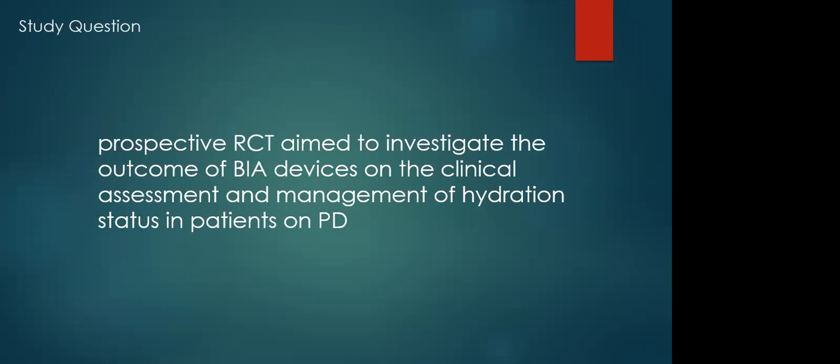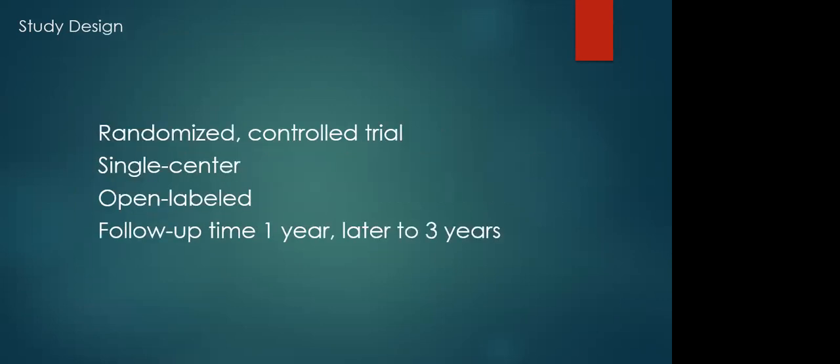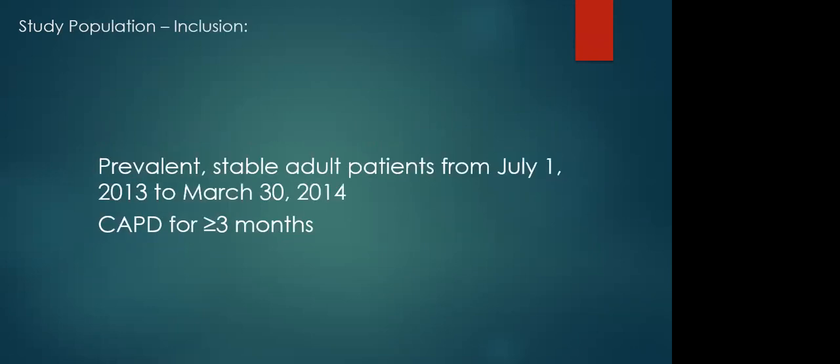The authors of this paper conducted an RCT that shows all-cause mortality as the primary outcome to see if it is at least safe to use this as a viable fluid management approach. It is a prospective randomized control trial aimed to investigate the outcome of BIA devices on clinical assessment and management of hydration status in patients on PD. It is open label, meaning investigators were not blinded to which treatment arm the patient was randomized to. It had a follow-up of one year which later was extended to three years, and this was done at a single center in a southern metropolitan city in southern China.